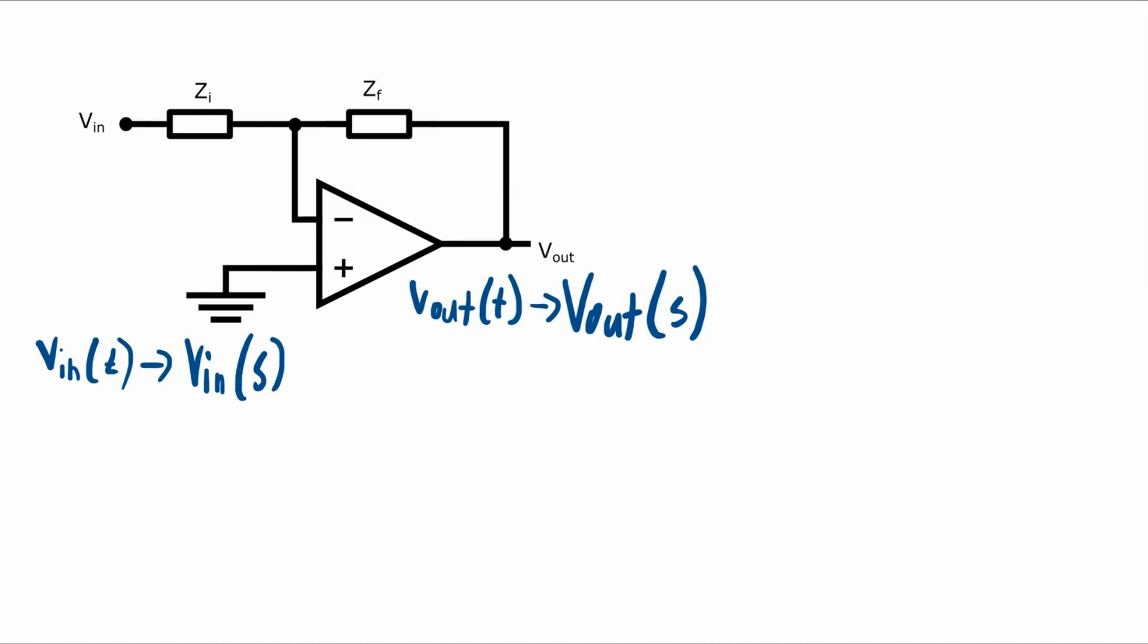Then for the impedances we can represent the components with their appropriate complex representation. R is just R but for the capacitor that can be represented as 1 over j omega c. But since we're doing this in the complex frequency domain, this j omega becomes s, so we can just represent the capacitor as 1 over sc.